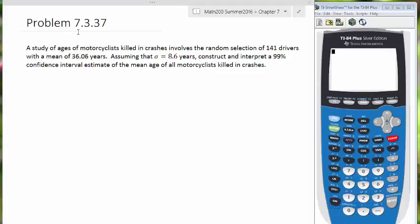This is a problem from Section 7-3, similar to your homework. A study of ages of motorcyclists killed in crashes involves a random selection of 141 drivers with a mean of 36.06 years. Assuming that sigma is equal to 8.6 years, construct and interpret a 99% confidence interval estimate of the mean age of all motorcyclists killed in crashes.